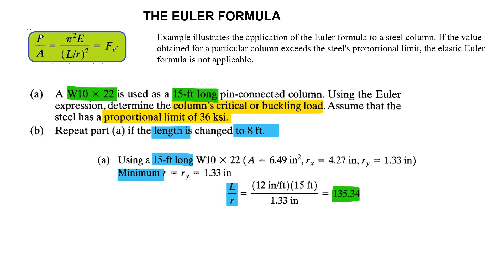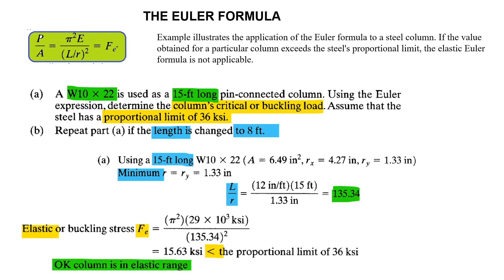Using a 15 feet long W10 by 22, the minimum radius of gyration is ry equals 1.33 inches. L by r will become 12 times 15 feet divided by 1.33 inches, which equals 135.34.